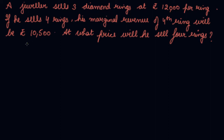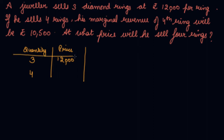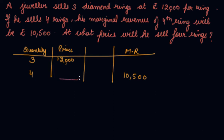In this question, a jeweler sells three diamond rings at a price of 12,000. He sells four rings and the marginal revenue is given as 10,500. We have to find out the price at which he sells four rings. We have set this up in a tabular form.